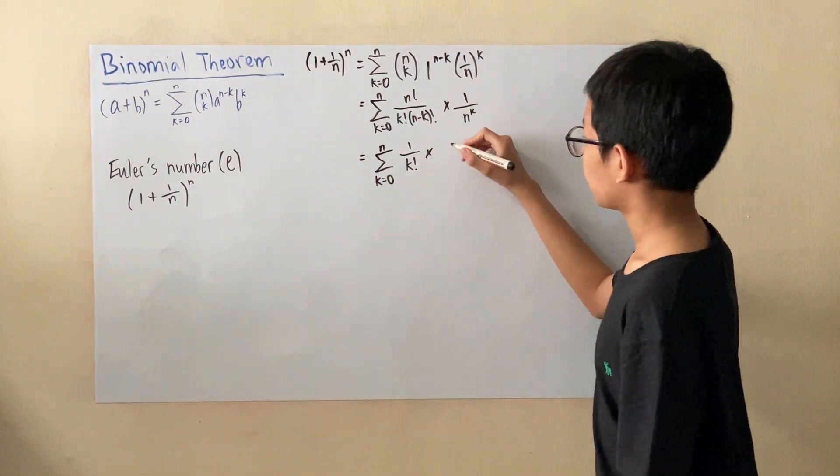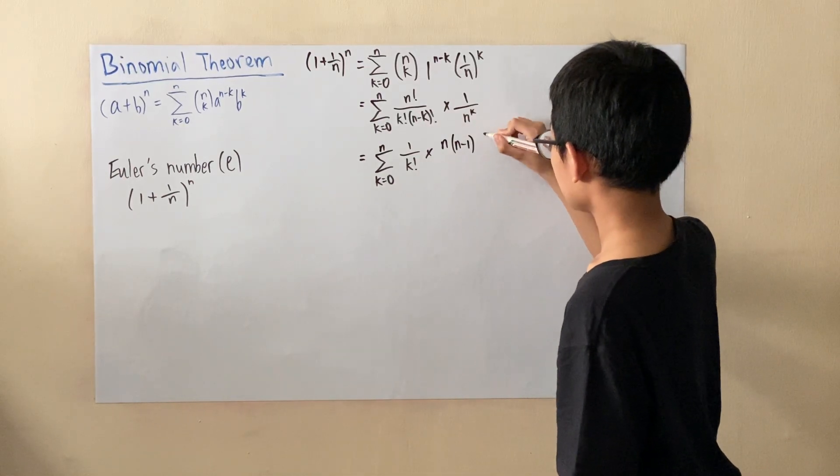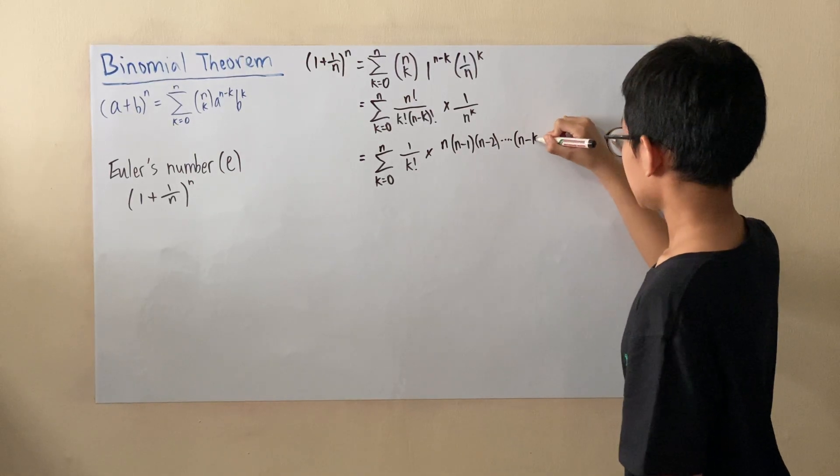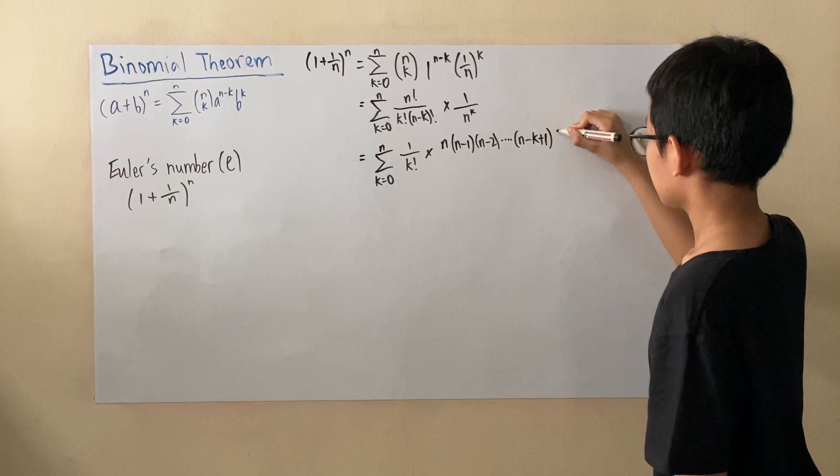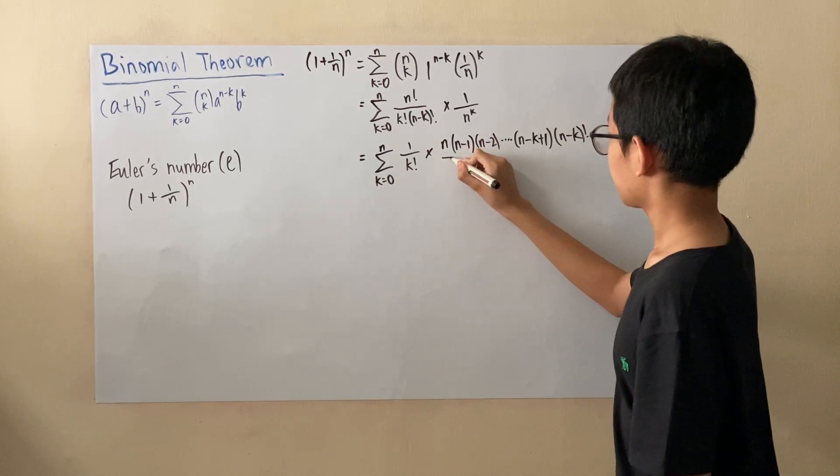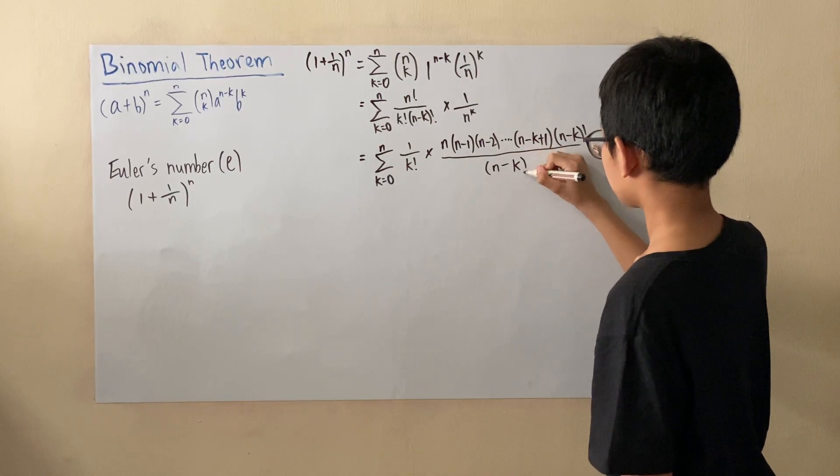However, for this case, we'll write n factorial as n times (n-1) times (n-2) all the way to (n-k+1) times (n-k) factorial over (n-k) factorial.